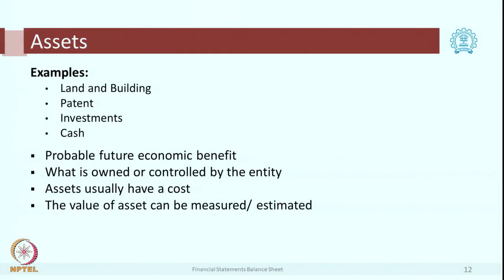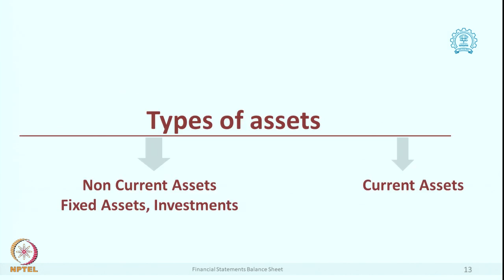Let us briefly revise assets and liabilities. Assets — I think you all know — this is something which is a property or a resource of a company which has a value and is likely to give some probable future cash flow. There are a variety of examples which are in front of you, so I am not repeating them.